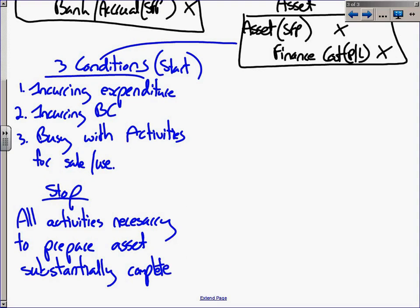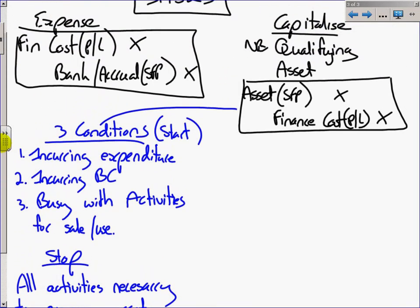That's when you start and when you stop capitalizing. Before then all interest is expensed. When all activities necessary to prepare the asset are substantially complete you stop, and any interest expense thereafter will be expensed. Now when you're doing the calculations for how much borrowing costs need to be capitalized, you're either going to deal with specific borrowings or general borrowings.